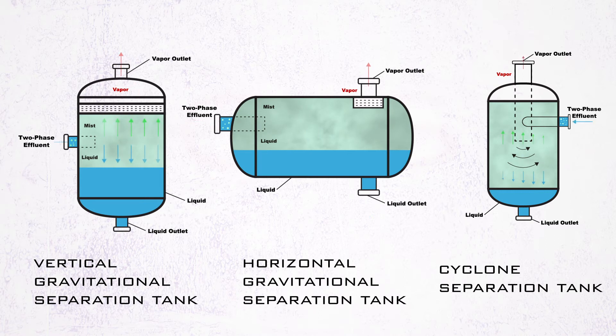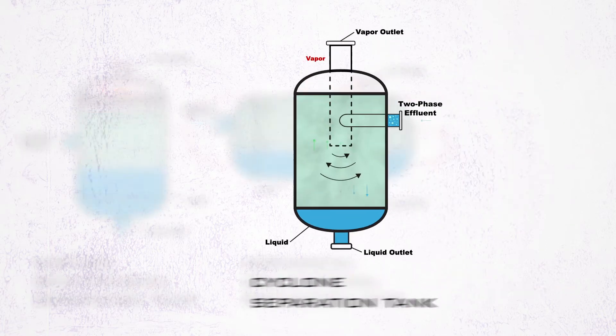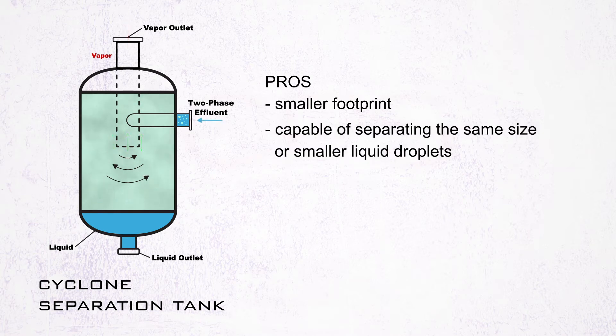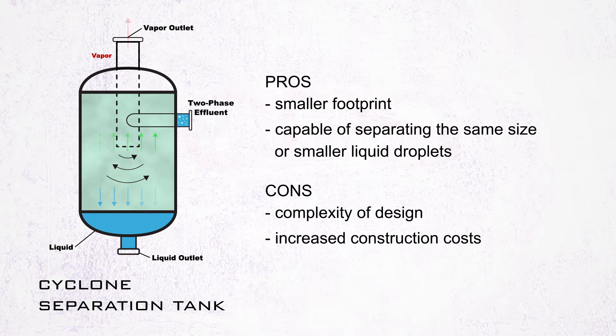Each of these types has its advantages and disadvantages. For example, a cyclone separation tank can be designed with more effective separation than the gravitational types, meaning the tank will have a smaller footprint while being capable of separating the same size or smaller liquid droplets. The trade-off is in the complexity of the design, which carries increased construction costs.